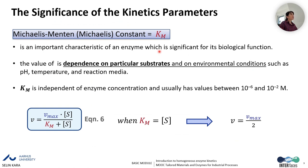Now we discuss the significance and meanings of the kinetic parameters. The Michaelis-Menten constant Km is an important characteristic of an enzyme significant for its biological function. It depends on the particular substrate and environmental conditions such as pH, temperature, and reaction media. Km is independent of enzyme concentration and typically has values between 10⁻⁵ and 10⁻² molar. Mathematically, Km is the substrate concentration at which we reach half of the Vmax value.